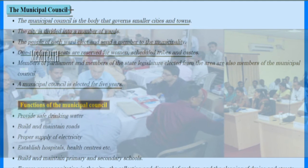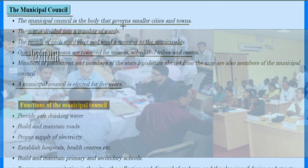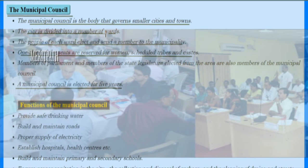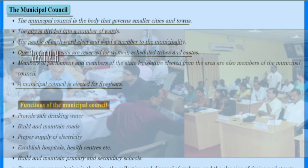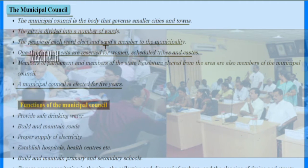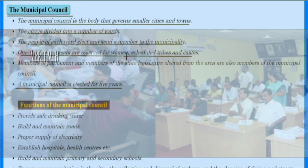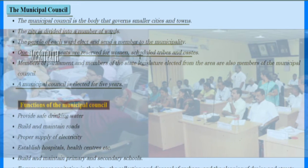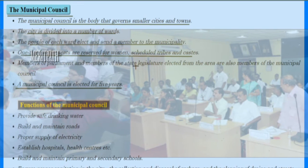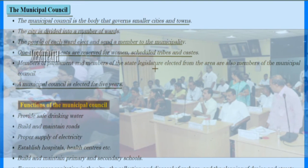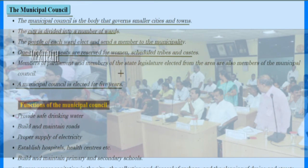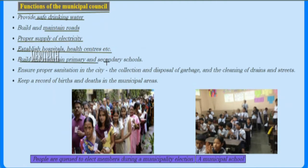The municipal council is the body which governs smaller cities and towns. The city is divided into a number of wards, and the people of each ward elect and send a member to the municipality. One third of the seats are reserved for women, scheduled tribes, and castes. Members of Parliament and members of the state legislature elected from the area are also members of the municipal council. A municipal council is elected for a period of five years.